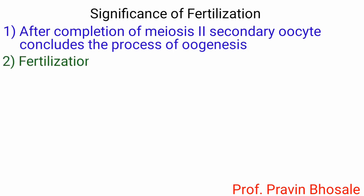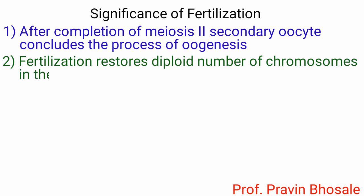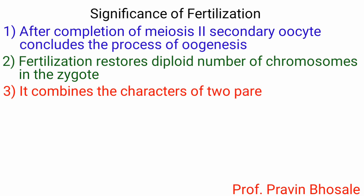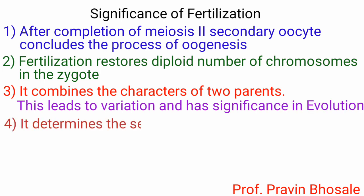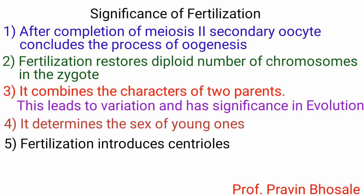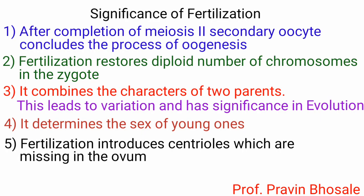Significance of fertilization: Fertilization restores the diploid number of chromosomes in the zygote. It combines the characters of two parents, leading to variation, which has significance in evolution. It determines the sex of the young one. Fertilization also introduces the centriole, which is missing in the ovum.